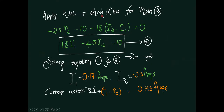In a similar fashion, applying Ohm's law for mesh number two: minus 25 I2, minus 10, minus 18 into (I2 minus I1) equals zero — this is equation number two. Solving those two equations, we get I1 approximately 0.17 amperes and I2 approximately 0.15 amperes. The minus sign means the direction of current flow is opposite to our convention. Current across 18 ohms is I1 minus I2, approximately 0.33 amperes when both sources are active.